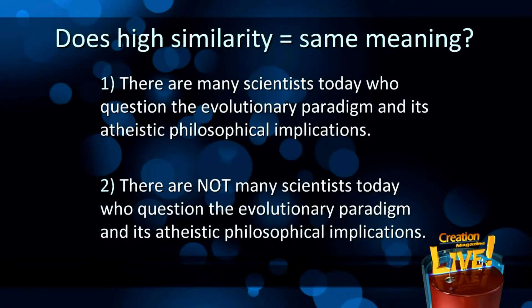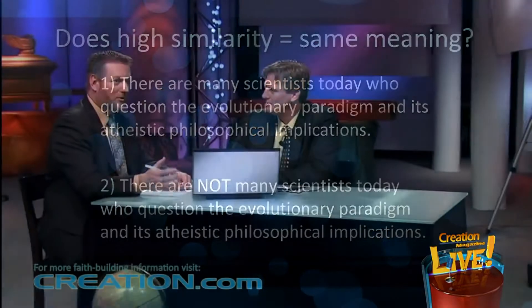Look at these two sentences. 'There are many scientists today who question the evolutionary paradigm and its atheistic philosophical implications.' Sentence two: 'There are not many scientists today who question the evolutionary paradigm and its atheistic philosophical implications.' These sentences have a 97% homology — they're 97% similar but have almost exactly opposite meanings.